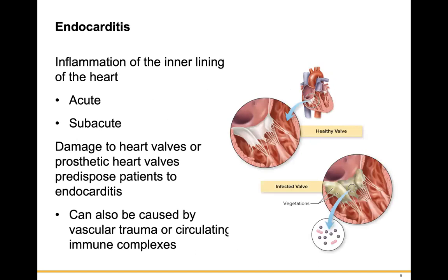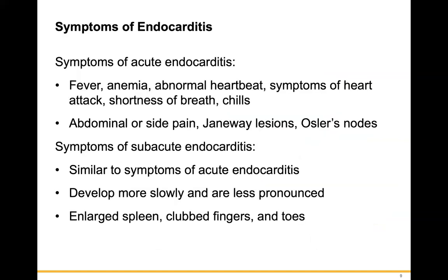The first disease is endocarditis, which is inflammation of the inner lining of the heart. It can be acute or subacute and can lead to damage of heart valves or prosthetic heart valves. It can also be caused by vascular trauma or circulating immune complexes. Symptoms include fever, anemia, abnormal heartbeat, symptoms of heart attack, shortness of breath, chills, abdominal or side pain, and Janeway lesions or ulcerous nodules. Subacute endocarditis develops more slowly and symptoms are less pronounced.